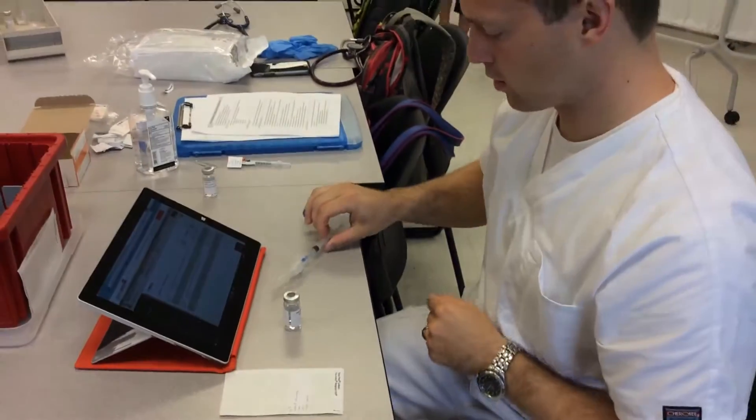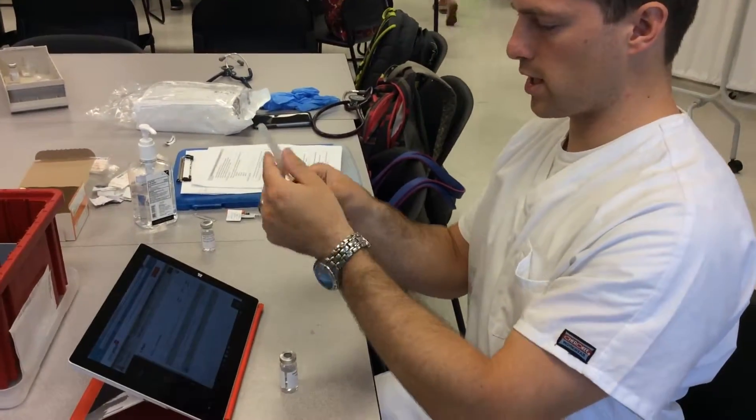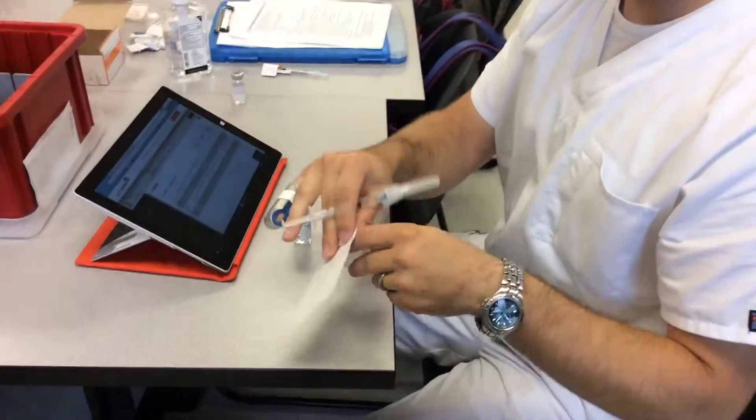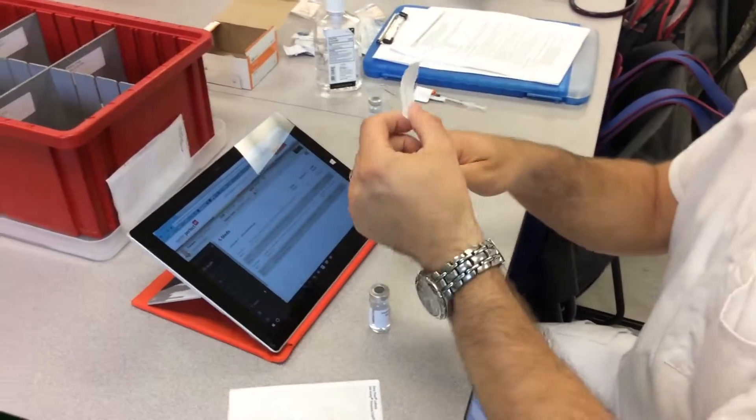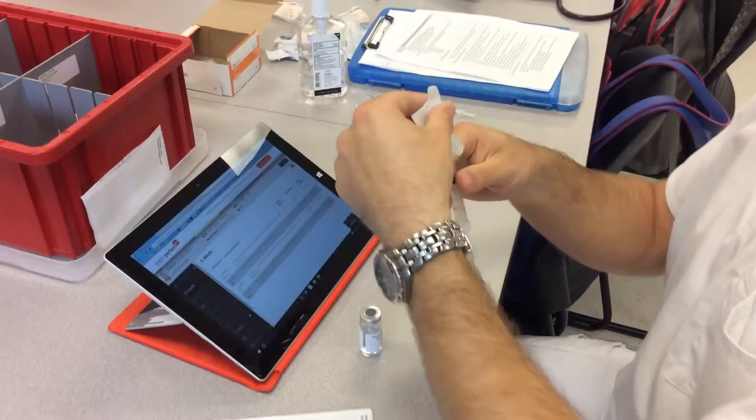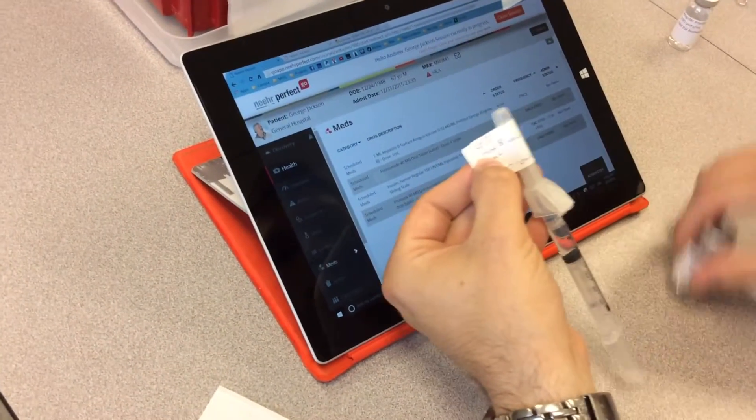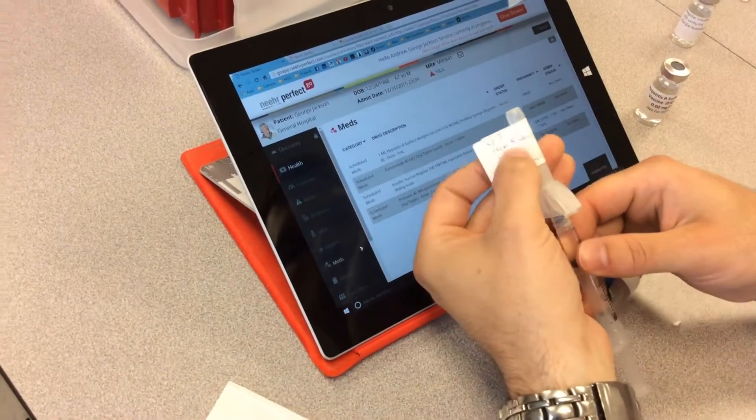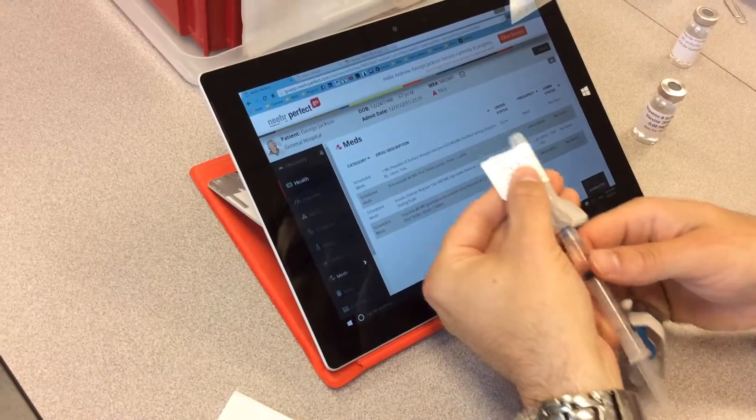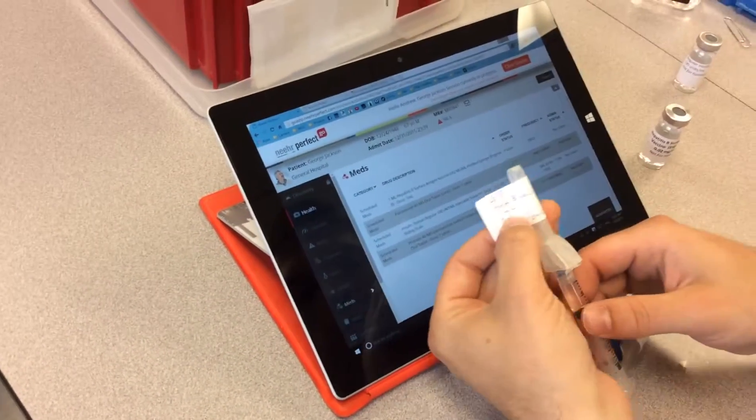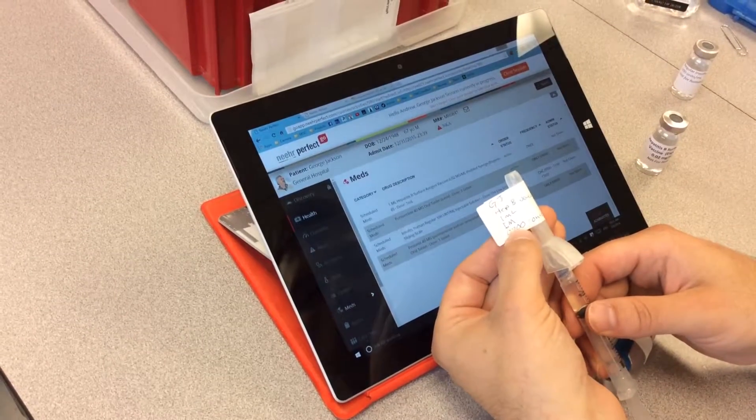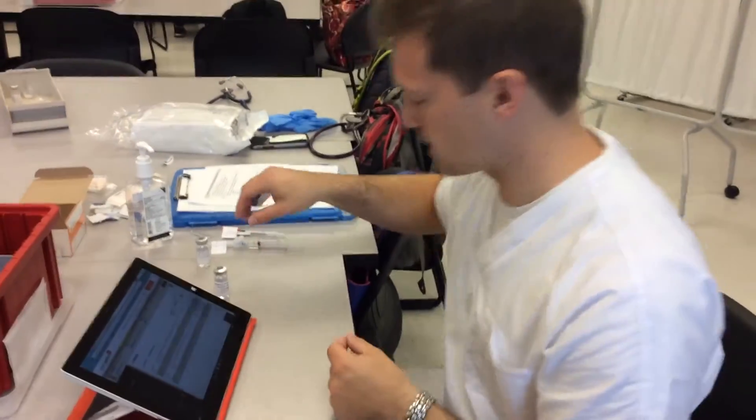I'm going to scoop the lid on from the side. I have a label for this one - I do need to label this one always. I'm going to do the five rights again. That's George Jackson, Hepatitis B vaccine, one milliliter, intramuscularly, 0700 once. That checks out.